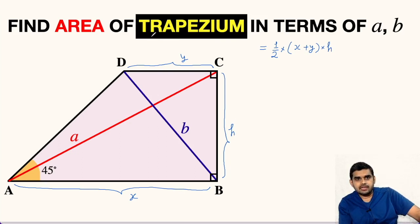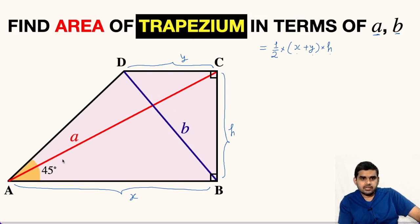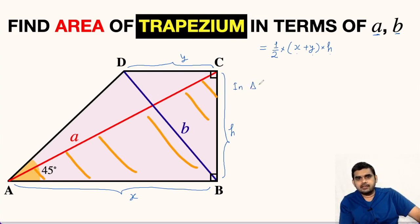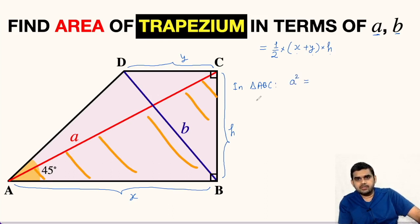Since we have to express the area in terms of small a and small b, let us focus on triangle ABC. In triangle ABC, it is a right-angle triangle. Note that 45 degrees is the complete angle A, not the angle inside this triangle. By the Pythagorean theorem, we can write a² = X² + H², and from here H² = a² − X². Let this be equation number 1.